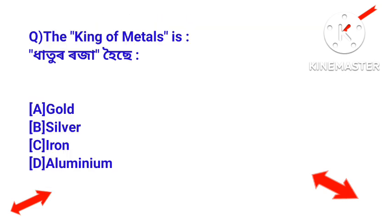Question: The king of metals is which metal? Answer: Gold — gold is considered the king of metals.